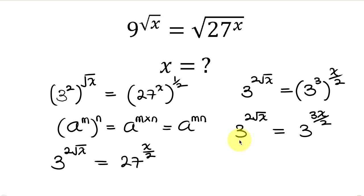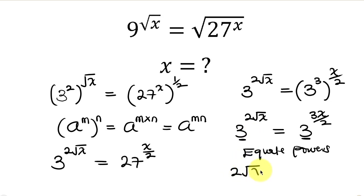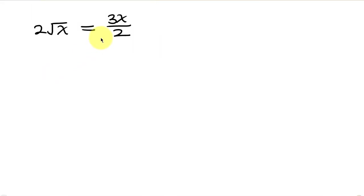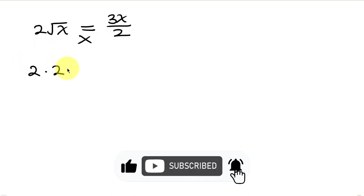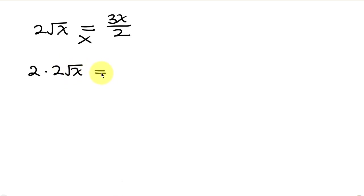Notice that the base on the left and the base on the right are both 3 — they are the same. When the bases are the same, all we have to do is equate the powers. The power on the left is 2√x and the power on the right is 3x over 2. Now cross multiplying: 2 multiplies 2√x on the left, and 3x times 1 on the right, giving 4√x equals 3x.